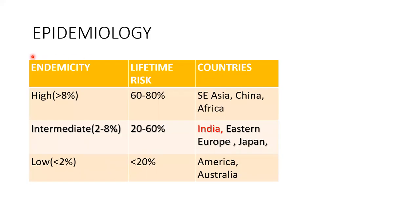Let's begin by understanding the epidemiology of hepatitis B. Based on endemicity, hepatitis B is divided into high endemicity, intermediate, and low endemic areas. India falls under the intermediate category where the lifetime risk of acquiring hepatitis B infection is about 20 to 60 percent.